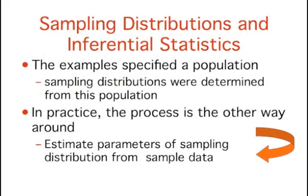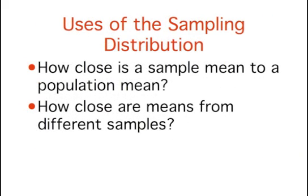As we stated at the beginning of this section, sampling distributions are important for inferential statistics. In the examples given so far, a population was specified, and the sampling distribution of the mean and range were determined. In practice, the process proceeds the other way: you collect sample data, and from these data, you estimate parameters for the sampling distribution. This knowledge can be very useful. Knowing the degree to which sample means differ from each other and from the population mean gives you a sense of how close your particular sample mean is likely to be to the population mean. This information is directly available from the sampling distribution.